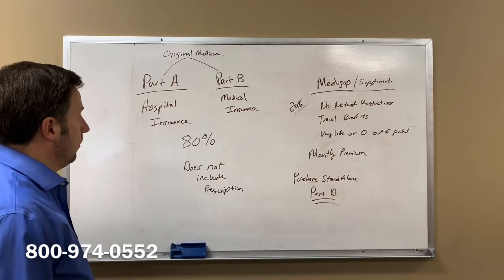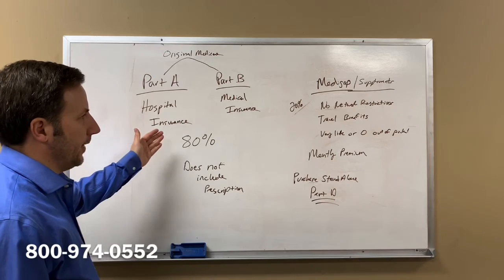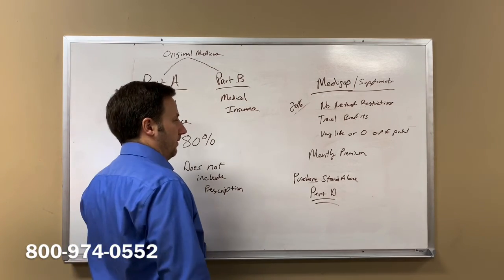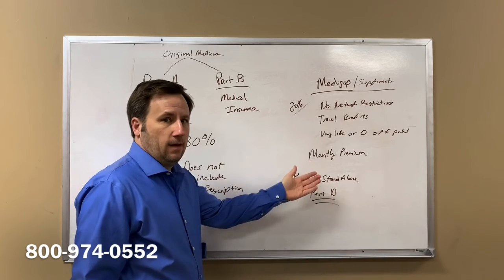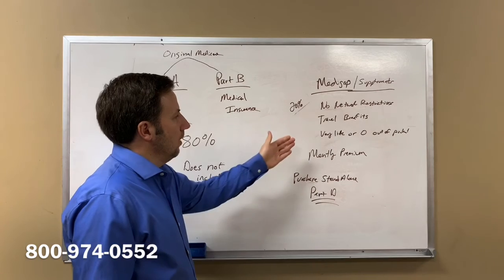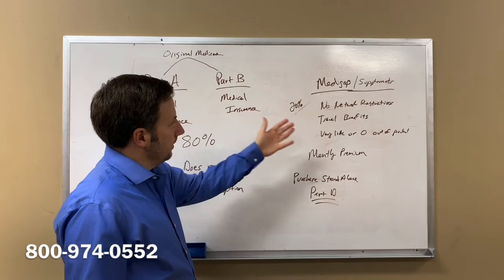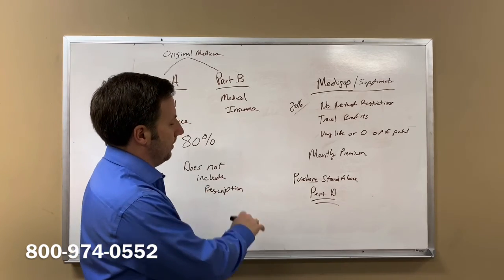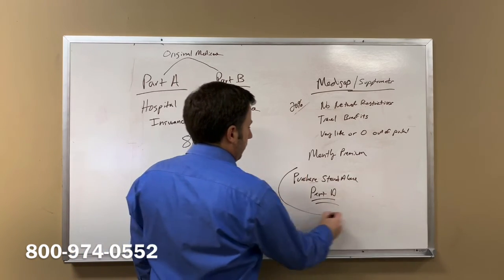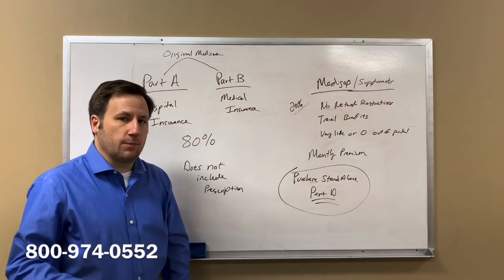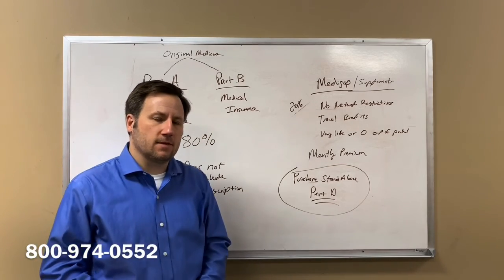So again, once you're enrolled in Original Medicare Part A and Part B, then you can decide how you want to receive your Medicare benefits. You can do the Part C that we talked about earlier in this video, or you can stay on Original Medicare and add a Medigap plan, which covers the 20% gap. And then you'll also have to purchase a standalone drug plan. This is just a brief overview of the different types of Medicare.